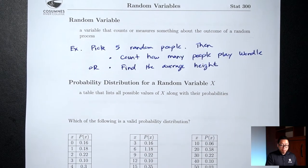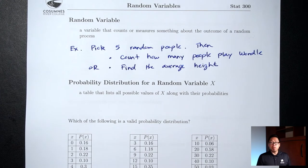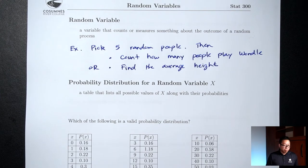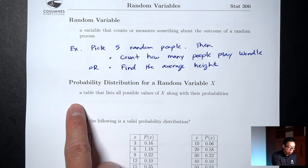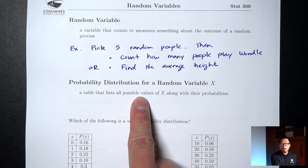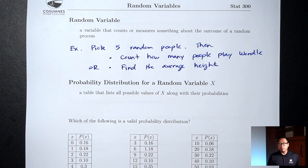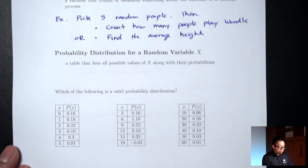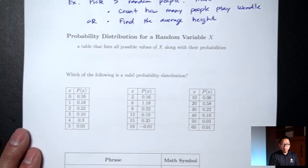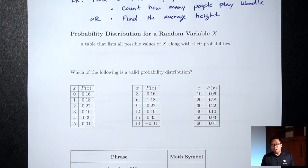A probability distribution is just a way to summarize the random variable. It's a table that lists all possible values of x along with their probabilities. Here I have three tables — some of these are valid probability distributions and some are not.